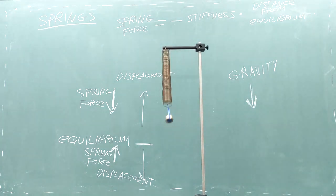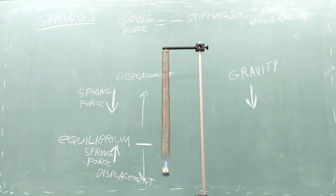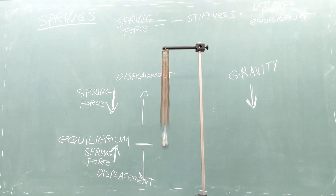The fact that the spring force always points opposite of the block's distance from equilibrium creates an interesting feedback loop. If we lift up the spring, gravity and the spring force pull the block back downward toward equilibrium.